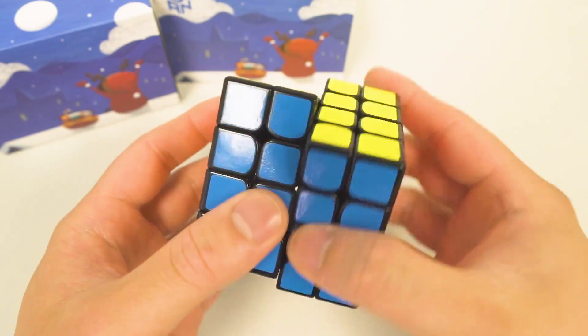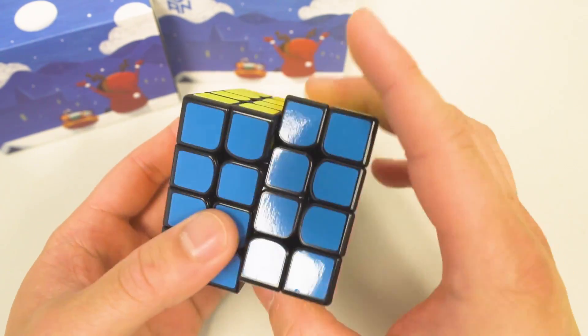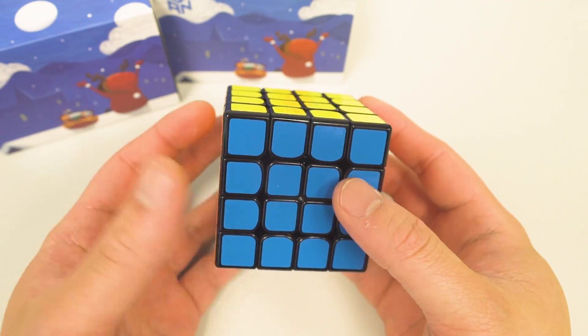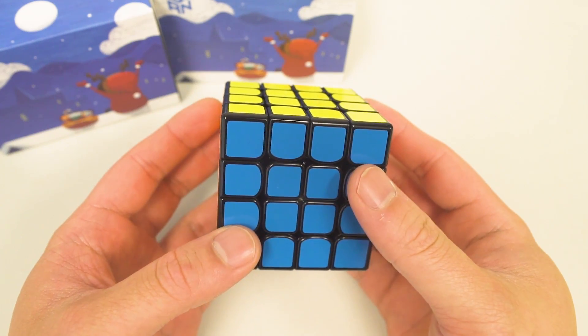The inner layer sometimes doesn't cut properly when I overturn and the cube deforms. That's one thing to be mindful of. Maybe some thicker lube will help with that, but in general this is a very fast crunchy 4x4.